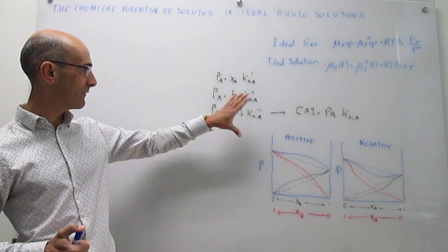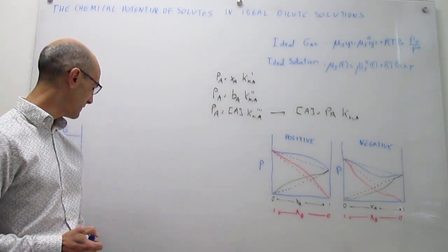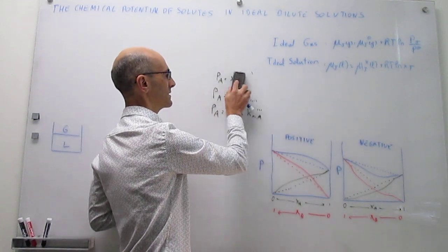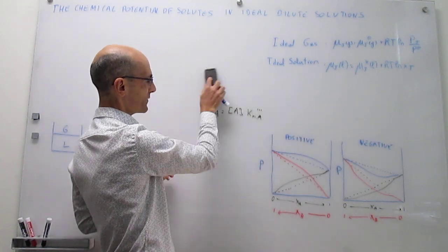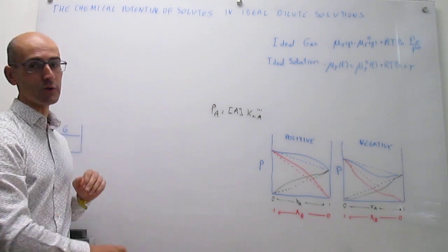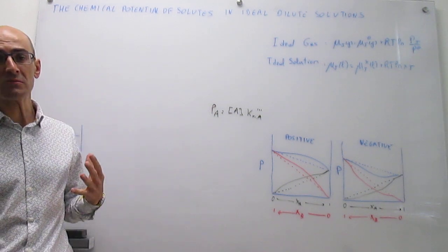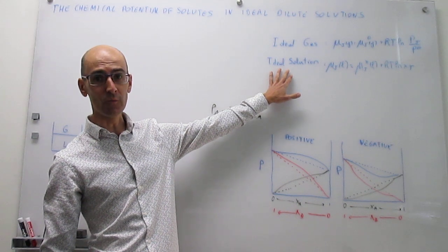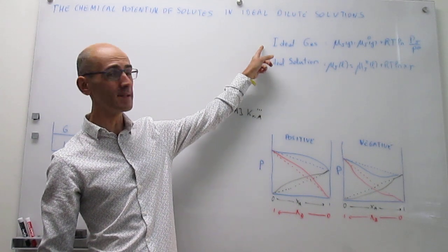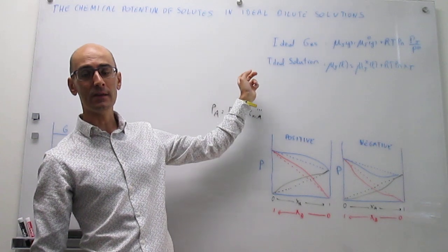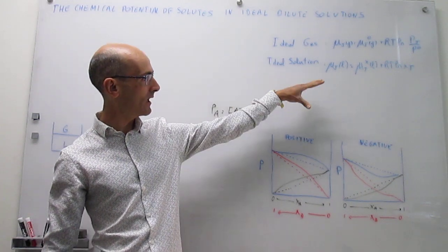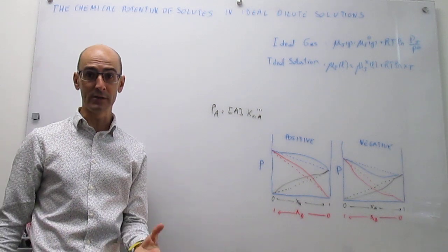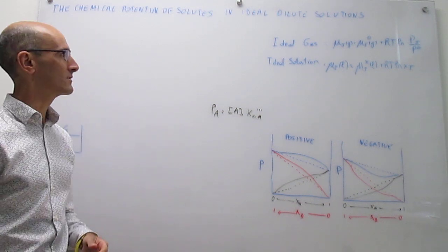Here we have Henry's law. There are four versions of it and the one that we're going to be using in this video for convenience is simply going to be this one. The way that we're going to carry out this derivation is much as what we did for an ideal solution — we're going to start from the ideal gas case and then apply Henry's law to see how we can transform that expression into something useful for a solute in an ideal dilute solution.